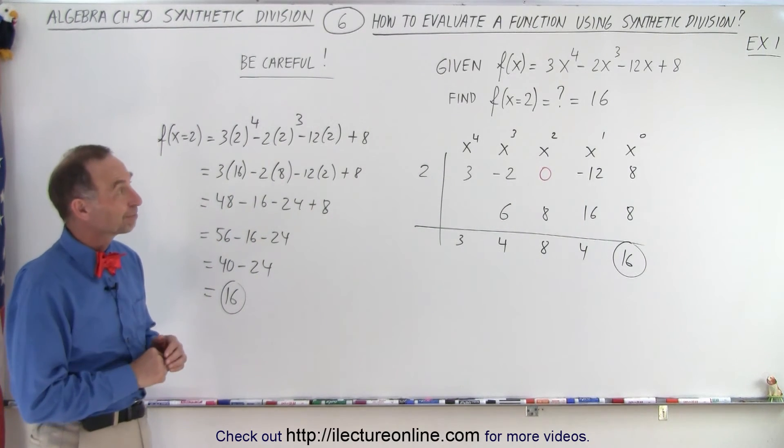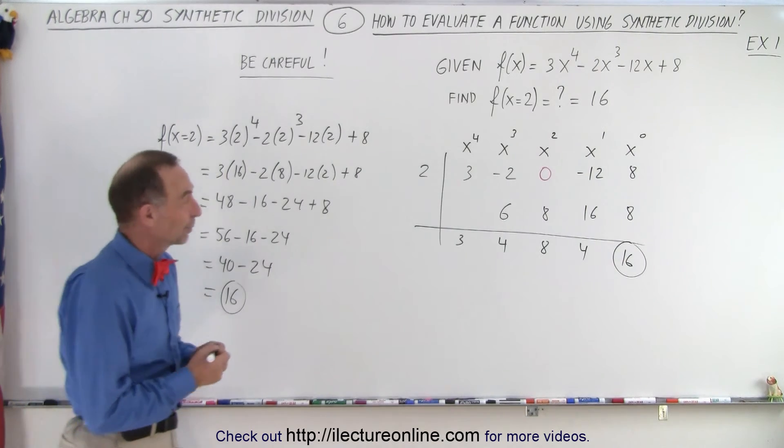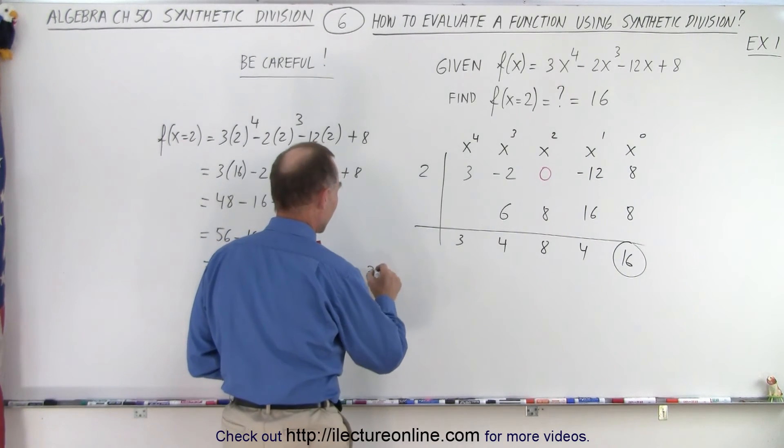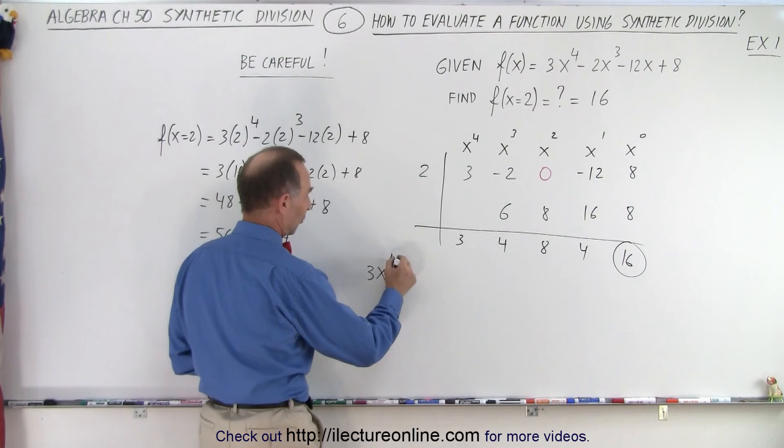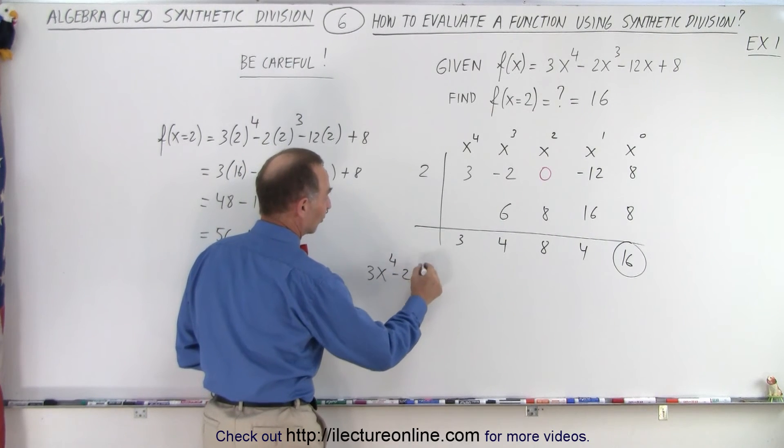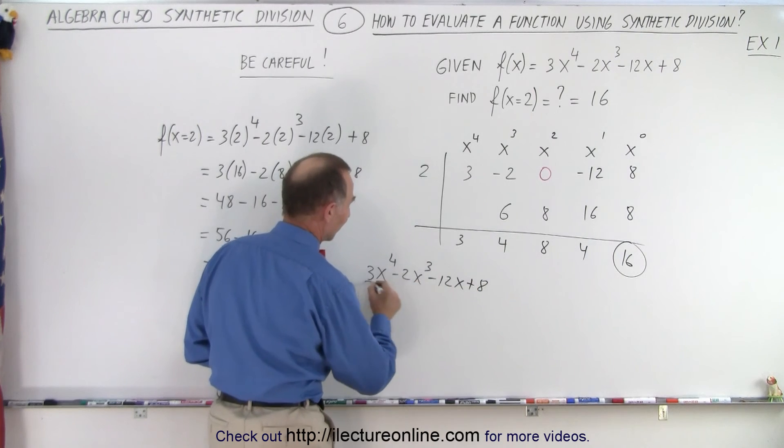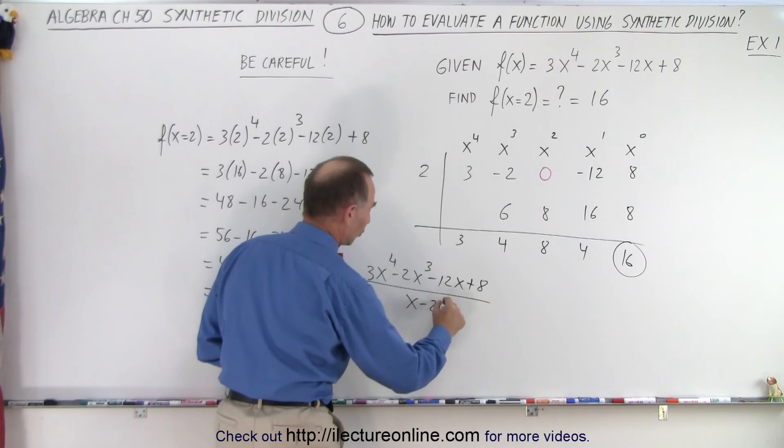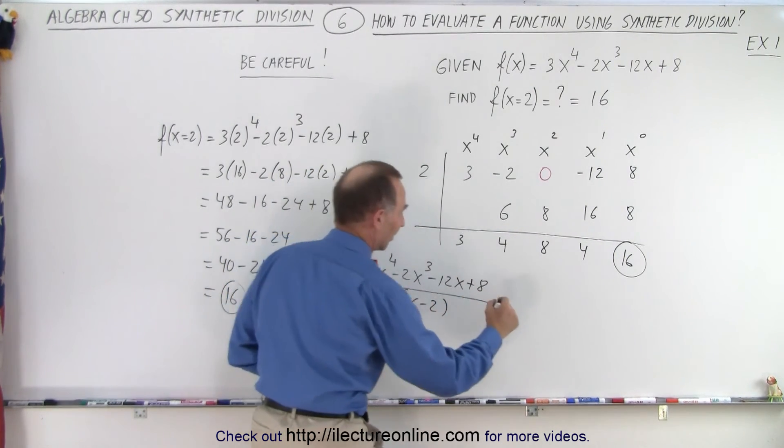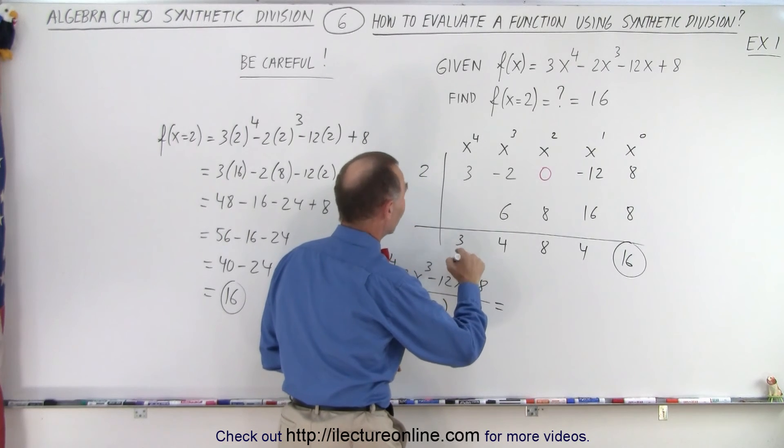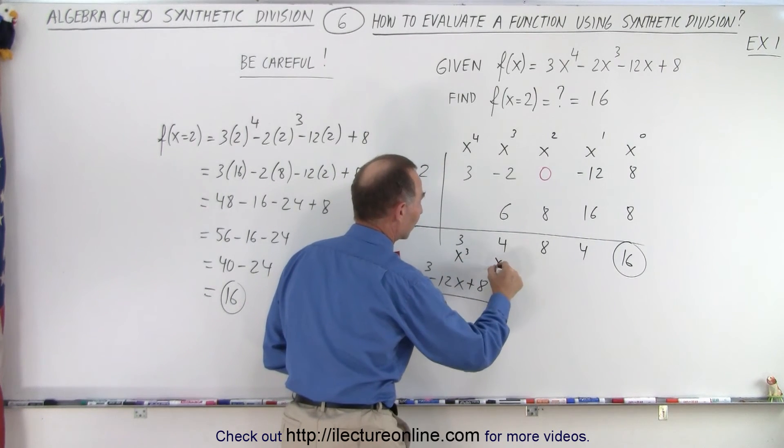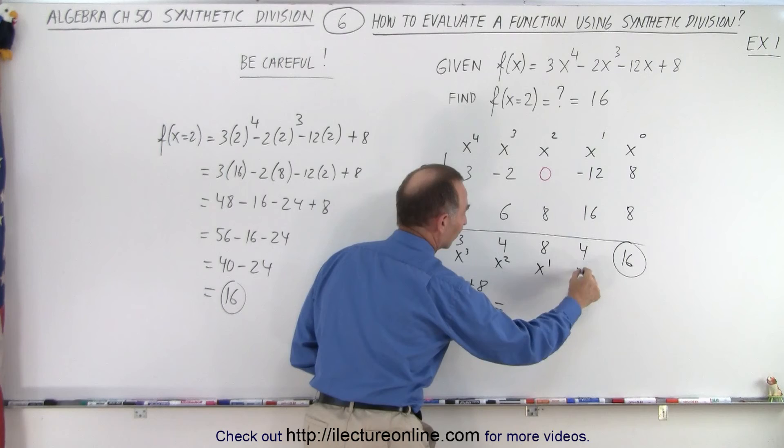If you divide that by x minus 2, it would be 3x. Correct. So if you take 3x to the 4th minus 2x cubed minus 12x plus 8, and you divide it by x minus 2, you will get, so this is x to the 3rd power, right? The x to the 3rd, x squared, x to the 1st, x to the 0.